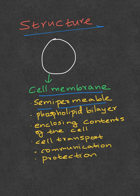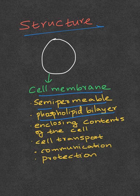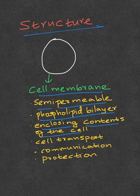The cell membrane only allows certain substances, like lipid-soluble substances, to pass through. It is also a phospholipid bilayer — you will learn more about this in further videos. It helps enclose all the contents of the cell.